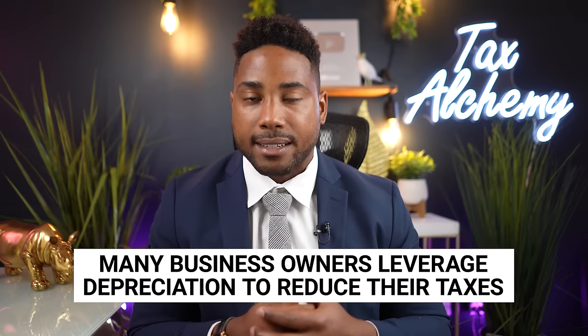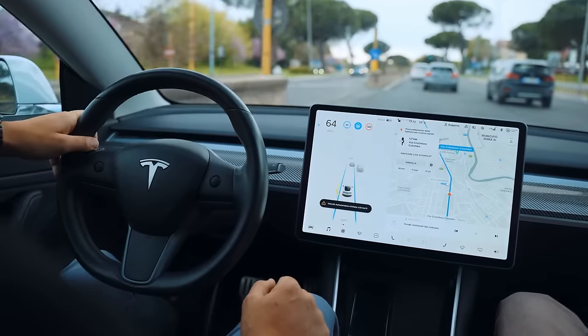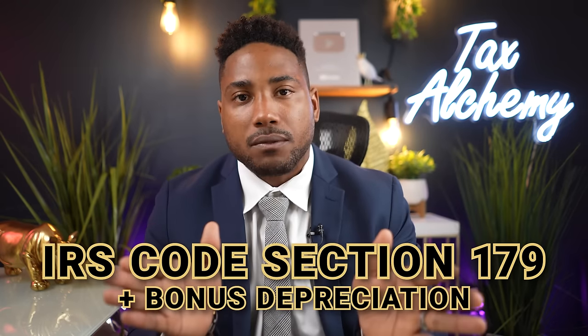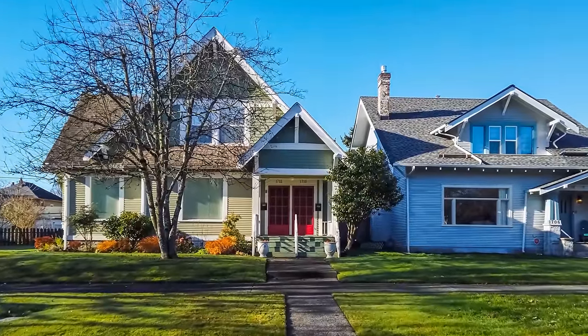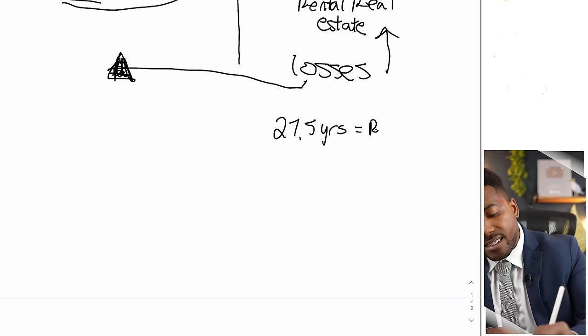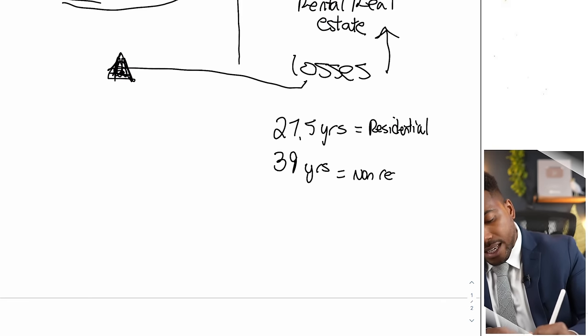Many business owners are leveraging depreciation to reduce their taxes. When you buy equipment or tools inside your business, the government doesn't just let you write everything off in one year — typically you have to depreciate items that last longer than one year. A MacBook Pro, a Sony camera, an automobile — these all last longer than one year. The government has changed some tax laws that allow for you to write things off in one year via code section 179 plus bonus depreciation, which many taxpayers have leveraged. But rental real estate is depreciated over 27.5 years for residential and 39 years for non-residential real estate.